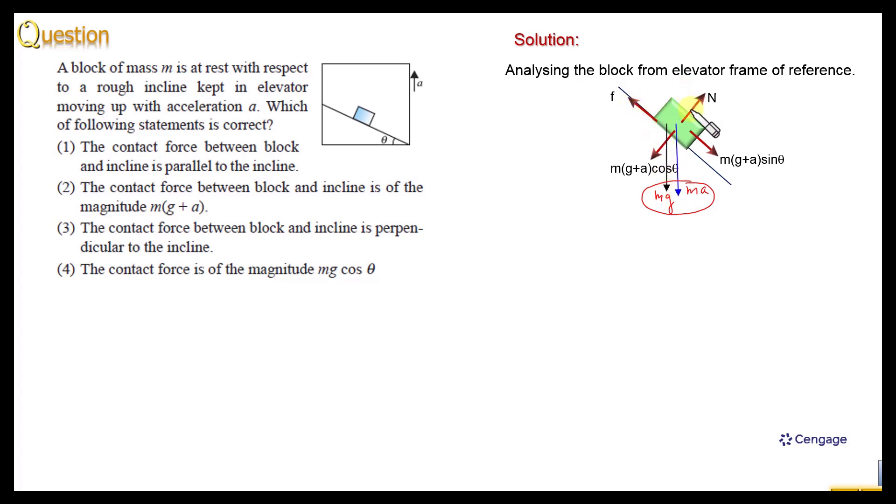And this block is at rest with respect to the inclined plane. So here we can write f equal to mg plus a sin theta. This is the equation for equilibrium of the block parallel to the inclined surface and normal reaction from free body diagram, we can write N equal to mg plus a cos theta.